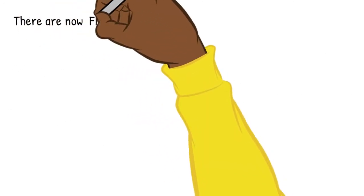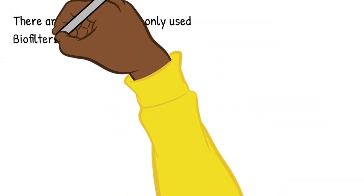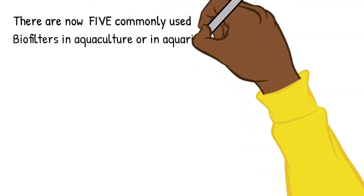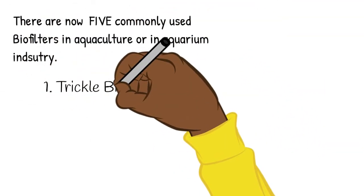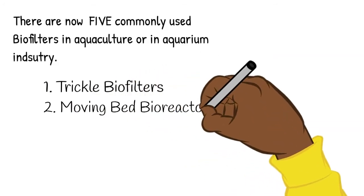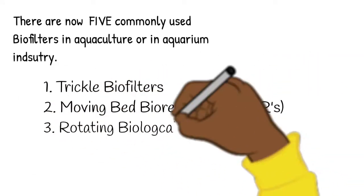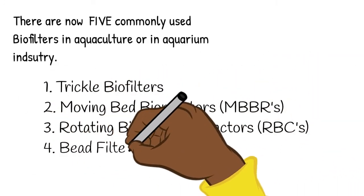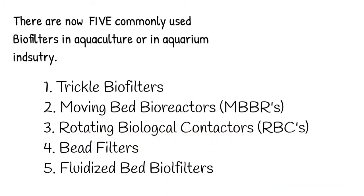There are five commonly used biofilters in aquaculture or the aquarium industry: trickling biofilters, moving bed bioreactors, rotating biological contactors, bead filters, and fluidized bed biofilters.